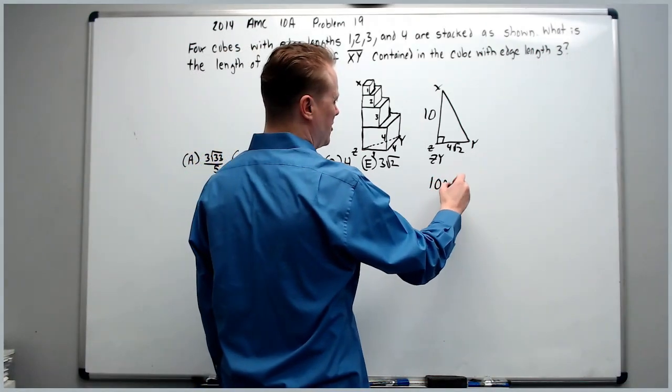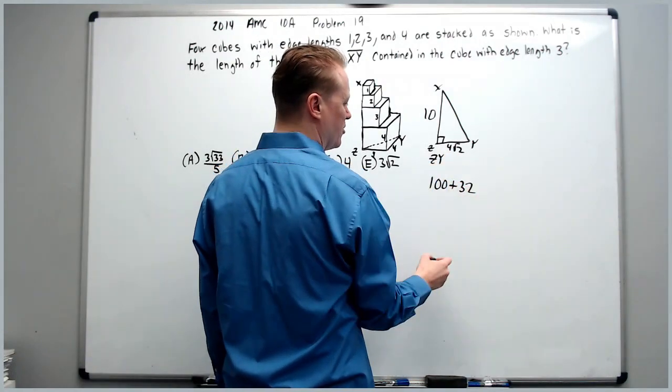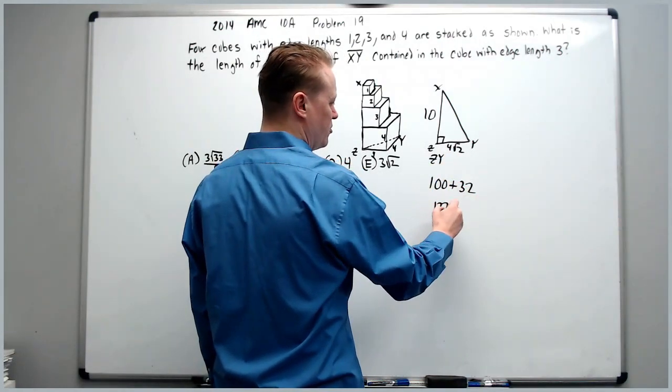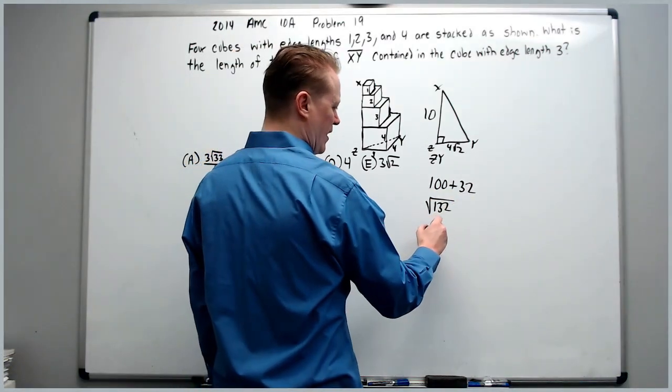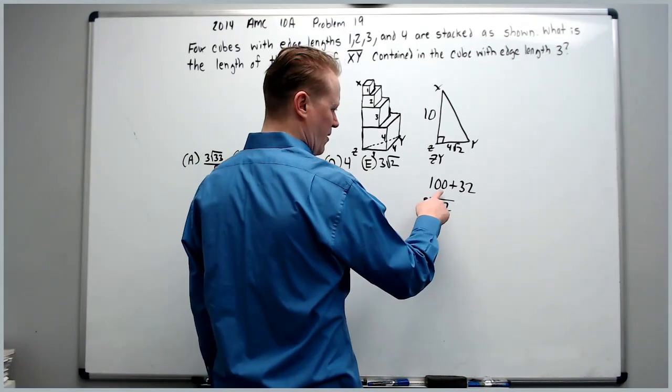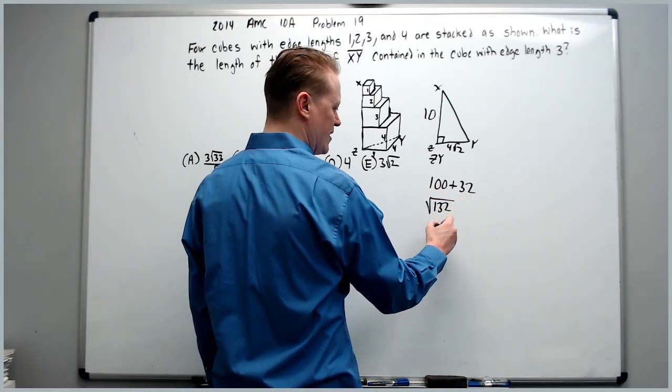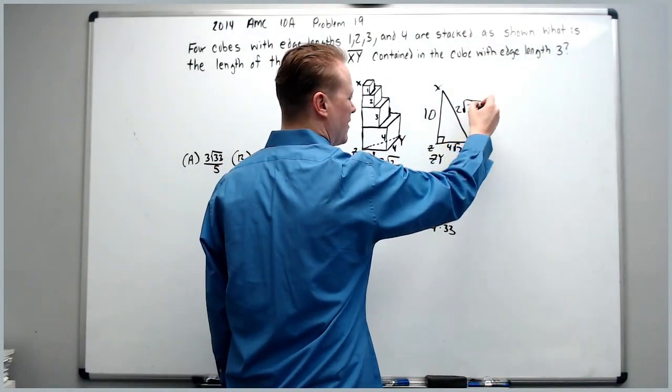So we get 100 plus 16 times 2 is 32, so 132 square rooted. This is divisible by 4. If I take out 4 I will get 4 times 25 plus 8 is 33. That makes this 2 radical 33.